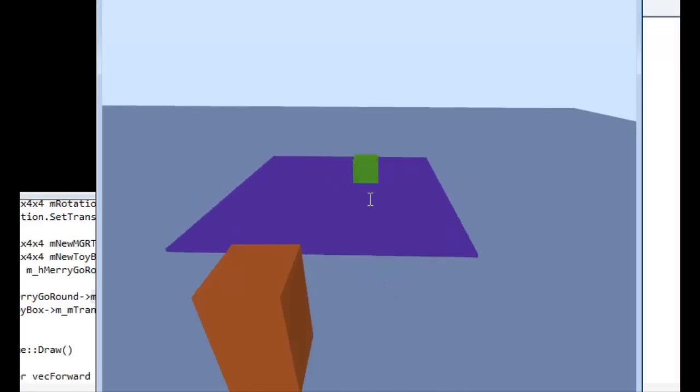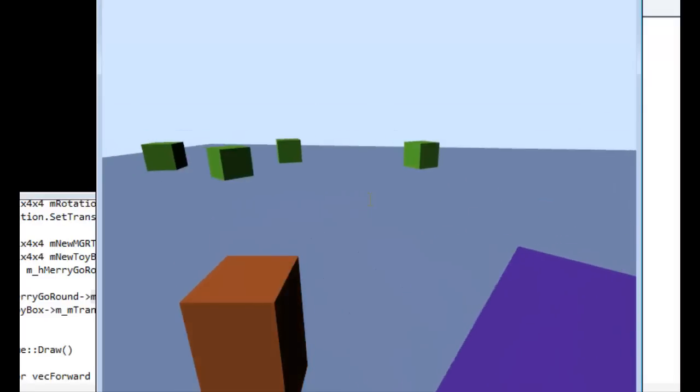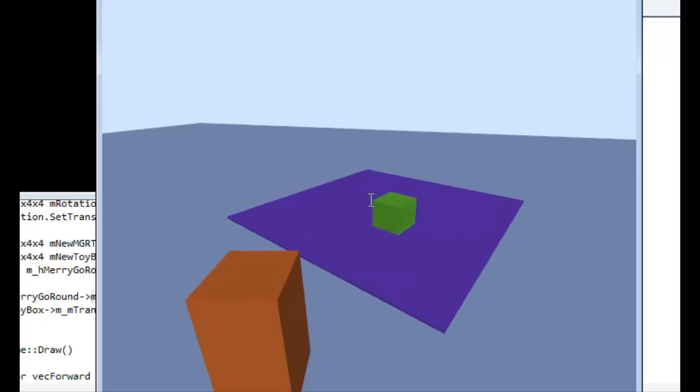Our merry-go-round is a square merry-go-round because we have not learned yet how to make circles. But that's okay because it spins normally. It spins perfectly. And you can see the box is spinning relative to the merry-go-round and not relative to the world. Same thing with the merry-go-round itself.